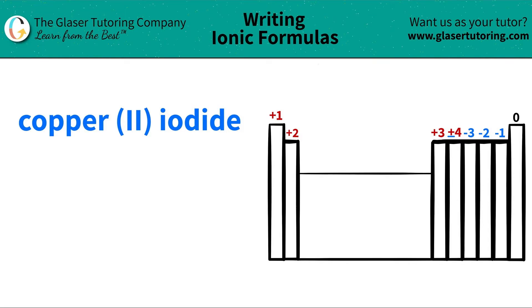Today we're going to be naming the formula for the ionic compound copper (II) iodide. In this case, let's find out where these elements are on the periodic table and then we'll take it from there.